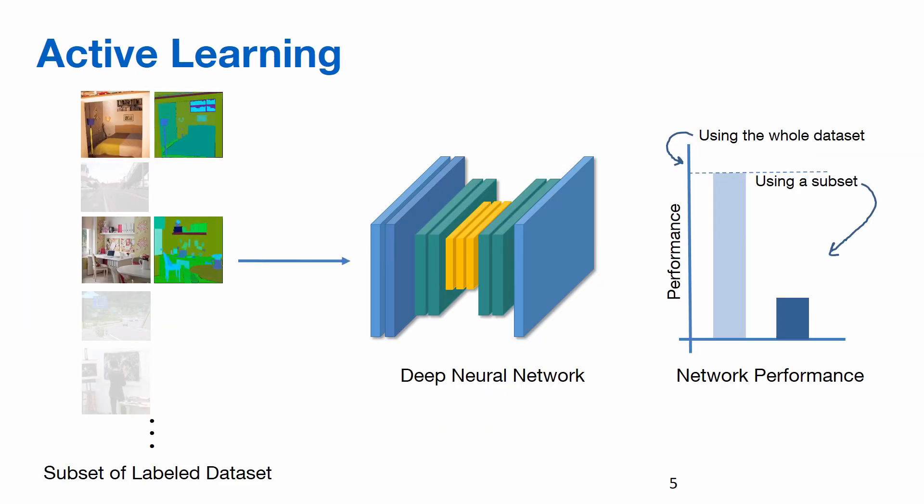Active learning is a promising technique where the model actively selects the data to be labeled, thereby reducing the labeling effort involved. Here, with only labeling a subset of data, comparable network performance can be achieved.